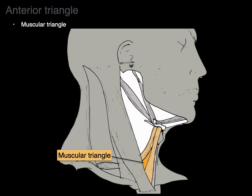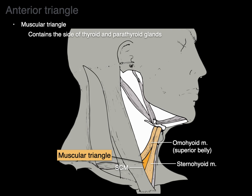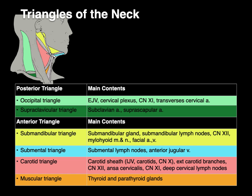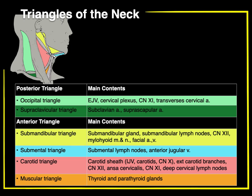Next, the muscular triangle, which is bordered by the omohyoid, the sternohyoid, and the sternocleidomastoid. Within there is primarily the thyroid gland and parathyroid gland. Clinically it's not that relevant, but it's in every single book so it's included. That, my friends, is all the triangles of the neck in a nutshell.